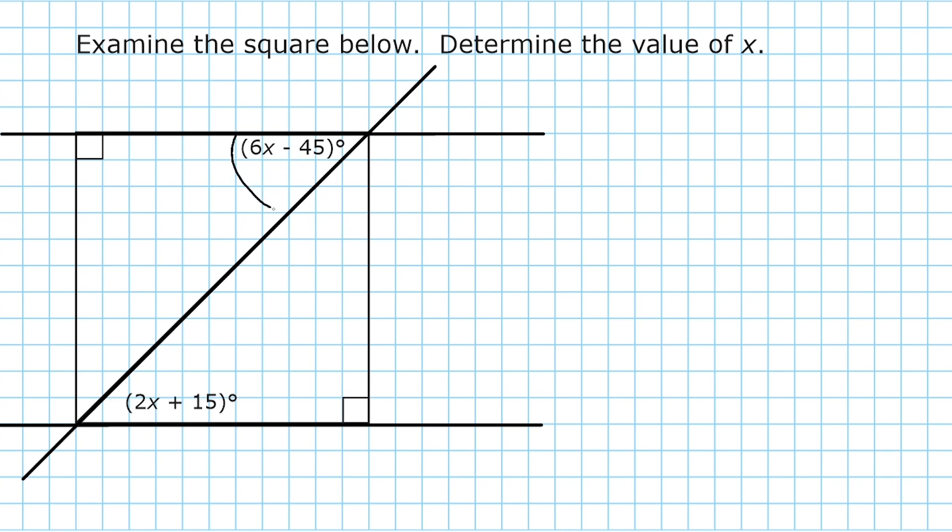For example, this angle here, which is on the inside of the parallel lines, and this angle right here, which is also inside the parallel lines, are called interior angles. And they are on alternate sides of the transversal. So these are called alternate interior angles. And alternate interior angles are always going to be equal to each other. Now we already knew that this angle here is 45 degrees, and this angle here is 45 degrees. But whenever we have any type of parallel lines cut across by a transversal, those alternate interior angles are going to be equal to each other.